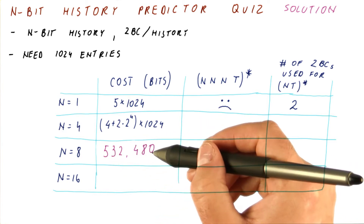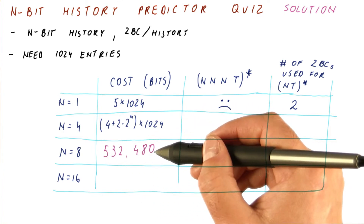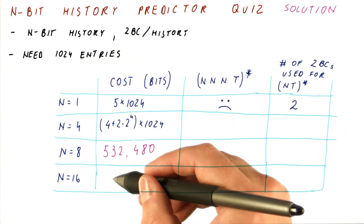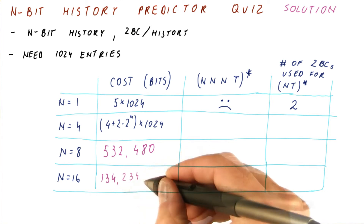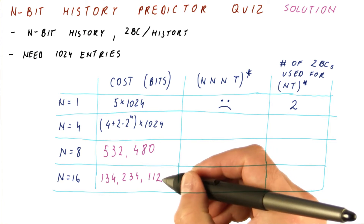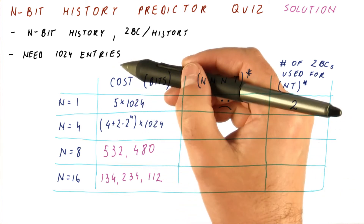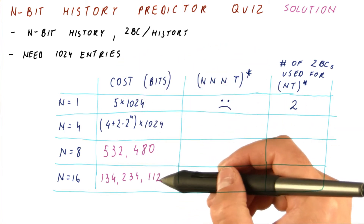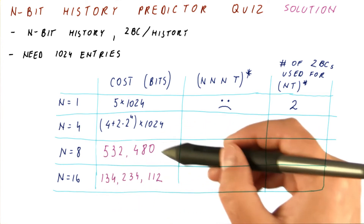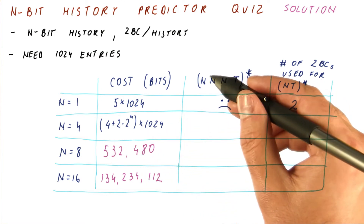So this is around half a megabit of predictor storage for just 1,024 entries. With n equals 16, we are talking about 134,234,112 bits — many, many megabits worth of predictor storage for the same number of entries. As you can see, this is probably not a realistic predictor at all, and even this one you probably don't want to spend that much hardware on just branch prediction.